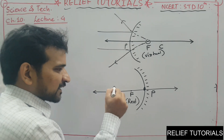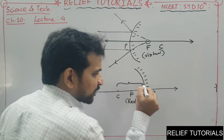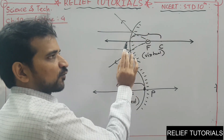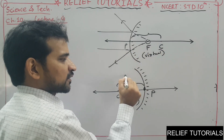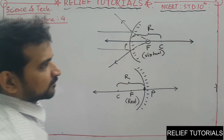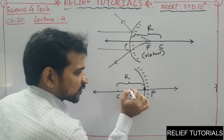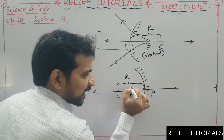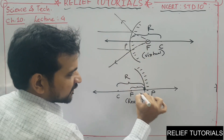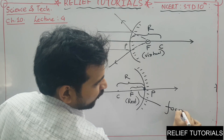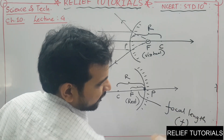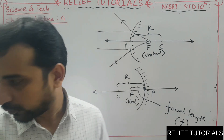The distance between C and P — from the pole to the center of curvature — is called the radius of curvature in both cases. And the distance from the pole to the principal focus is called the focal length.